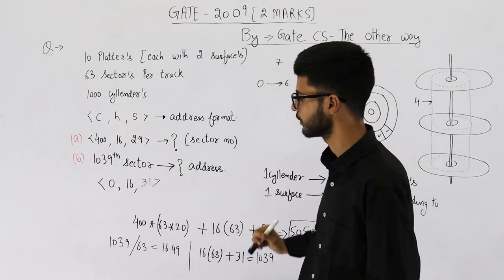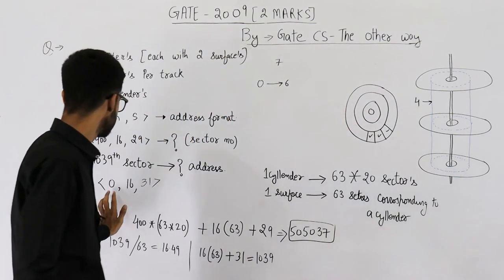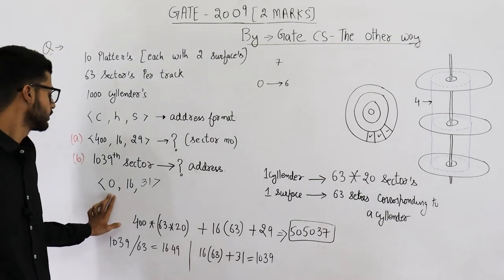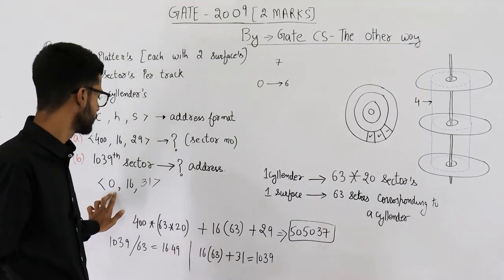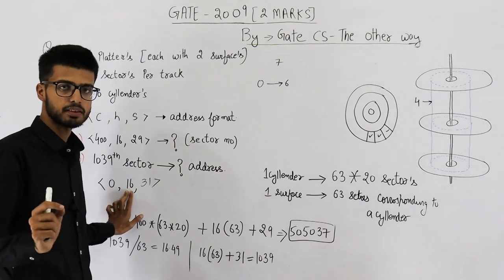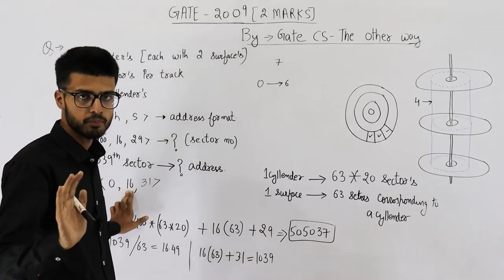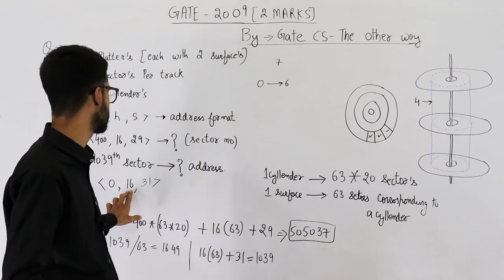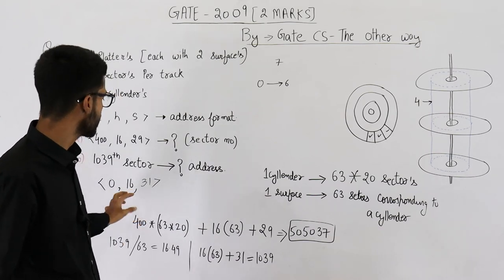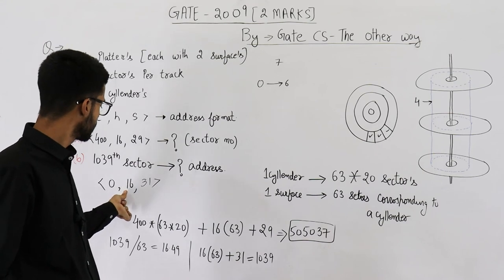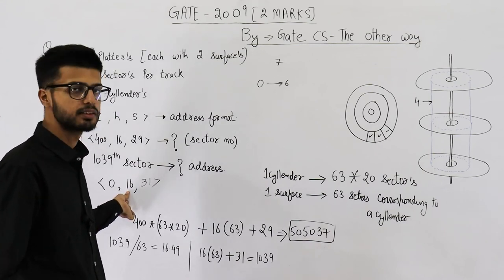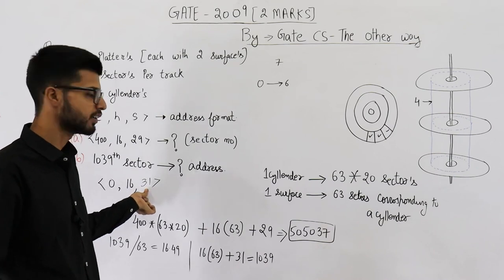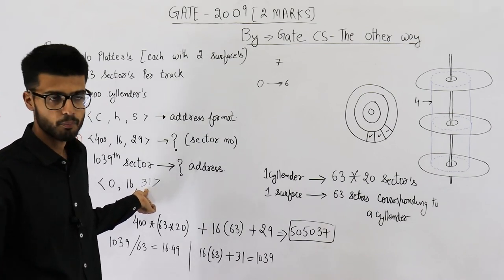Let me recap: C = 0 means no cylinder is completely filled. On the 0th cylinder, 16 complete surfaces have been filled. And on the 16th surface of the 0th cylinder, 31 sectors have been filled. So the address corresponding to sector number 1039 is 0,16,31.